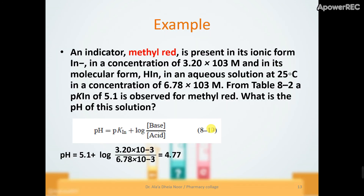Example: for methyl red indicator, the ionic (basic) form concentration is 3.2 × 10⁻³ and the molecular (acidic) form concentration is also given. From the table, the pKa(indicator) for methyl red is 5.1. To find the pH: pH equals pKa(indicator) plus log of base concentration over acid concentration, which gives: 5.1 plus log of 3.2 over 6.78 × 10⁻³.